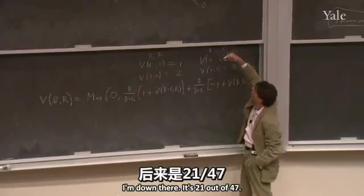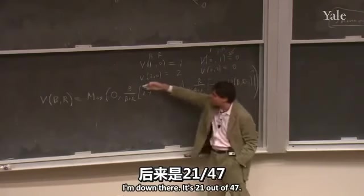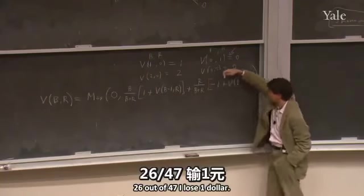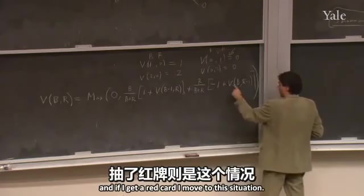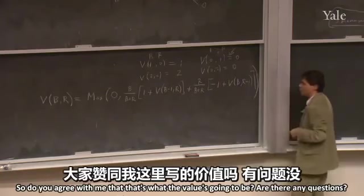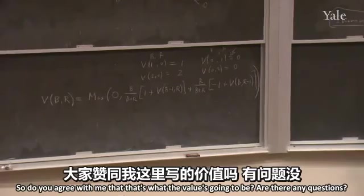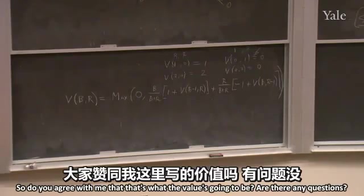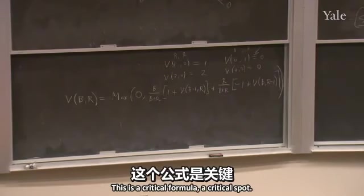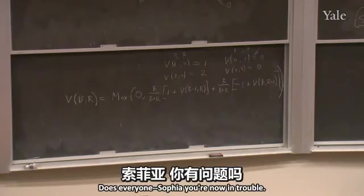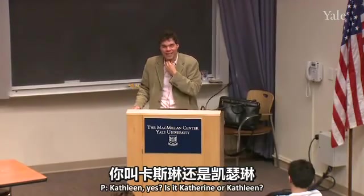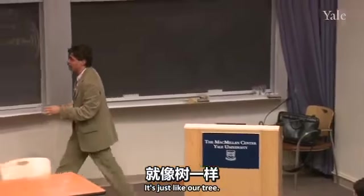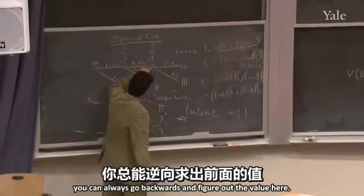So the value V(B, R) equals the maximum of 0 and: (B/(B+R)) × (1 + V(B-1, R)) + (R/(B+R)) × (-1 + V(B, R-1)). That's it. You either decide to stop, or if you draw a card you know the chances of getting a black card. It sounds horrible — 21 out of 47 you win a dollar, 26 out of 47 you lose a dollar — but if you get a black card you move to the improved situation, and if you get a red card you move to the other. Does everyone agree with this formula? It's just like our tree — once you know the values at the edges, you can go backwards.